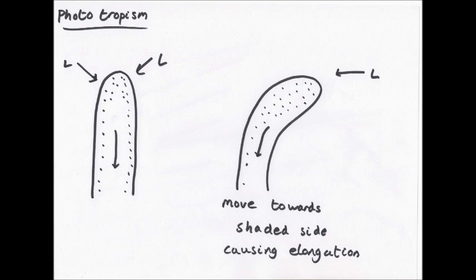When light comes from all directions, the plant grows straight upwards — auxins go down equally on both sides, elongating both sides equally, and at the bottom they are broken down by enzymes so you don't get the whole plant elongating. The book offers a possible reason: two proteins called phototropin-1 and phototropin-2, whose activity is promoted by blue light. There is more phototropin-1 activity on the light side and progressively less towards the darker side, and this gradient is thought to cause the redistribution of auxins.